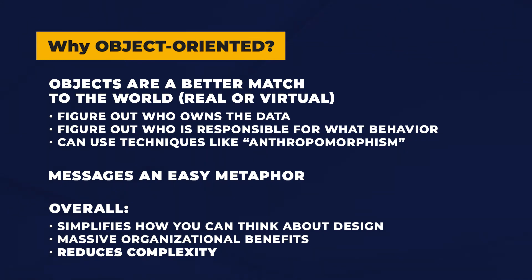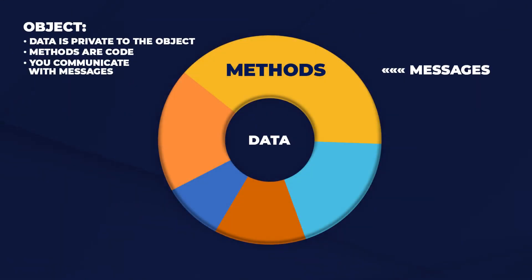Reducing complexity is key to solving difficult problems and keeping large software projects manageable. So let's take a quick look — what does an object look like? Here's a representation of an object: it has data and it's surrounded by methods. Data is private to the object. Methods are code and you communicate with messages. Now the data is private to the object — what does that mean?